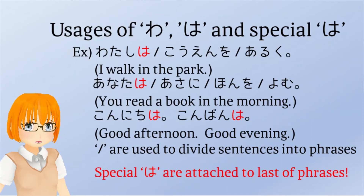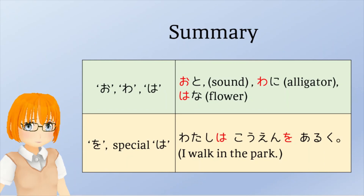These special は are attached to the last of phrases and pronounced wa. Please pay attention — special は is used in Japanese greeting messages: こんにちは and こんばんは. In casual writing, some people tend to write usual は instead of special は in these phrases. But actually, writing normal は is not correct.